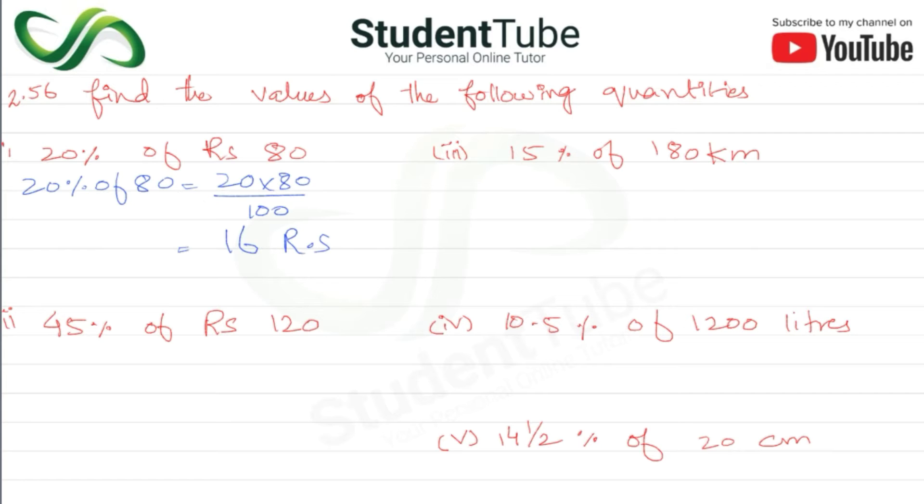Now 45% of rupees 120. So 45% of rupees 120 is equal to 45 multiplied by 120 divided by 100. So the answer will be 54.